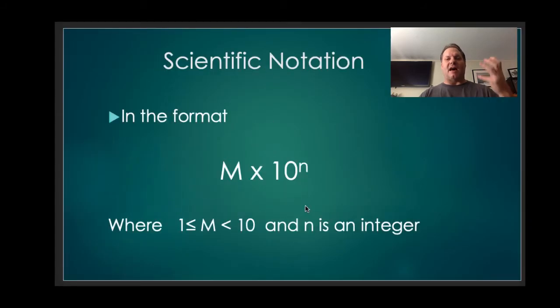Scientific notation is just in the format of m times 10 to the nth, where m is just a number equal to or greater than 1, but less than 10. And n is an integer, a whole number either negative or positive.